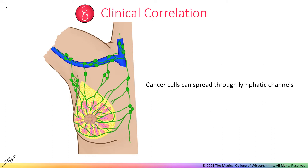Lymphatic drainage is incredibly important in the spread of breast cancer. Cancer cells that develop within the breast can metastasize, or break away from the tumor, and travel through lymphatic channels to seed in nearby lymph nodes. From these nodes, cancer cells can continue to grow and spread to other nodes or into the venous system. Note that often during surgeries to remove cancerous breast tissue, lymph nodes will also be collected and analyzed to determine if the cancer has spread from its site of origin.